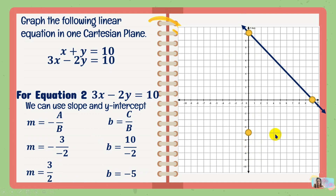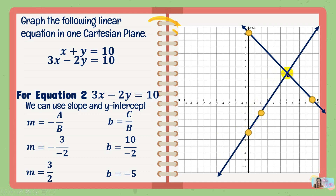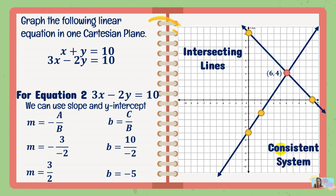We go 3 units upward and 2 units to the right for the second point, which is at positive 2 and negative 2. Then we draw the straight line passing through the first line, and it will have a point of intersection. The coordinates of that intersection are positive 6 and positive 4, and this is considered the solution to this system of linear equations. Since the lines are intersecting, this is a consistent system — x plus y equals 10 and 3x minus 2y equals 10 form a consistent system.